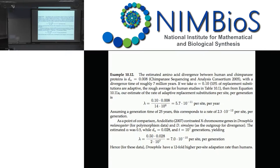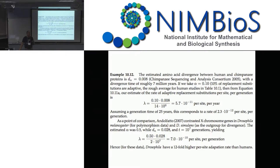That's how we take McDonald-Kreitman data and turn it into estimates of the fraction of adaptive substitutions and therefore the rate of adaptive substitutions. The big concern is how to adjust for the fact that polymorphism data at advantageous sites is probably overestimated due to weakly deleterious alleles. We've gone through a couple of methods, but it remains an evolving area.